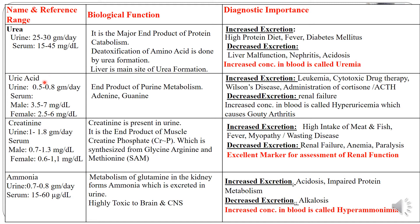The second nitrogenous compound is uric acid. In urine, it is excreted as 0.5 to 0.8 grams per day. And in serum, there is a difference in values: in males, it is 3.5 to 7 milligrams per deciliter, whereas in females, it is 2.5 to 6 milligrams per deciliter.